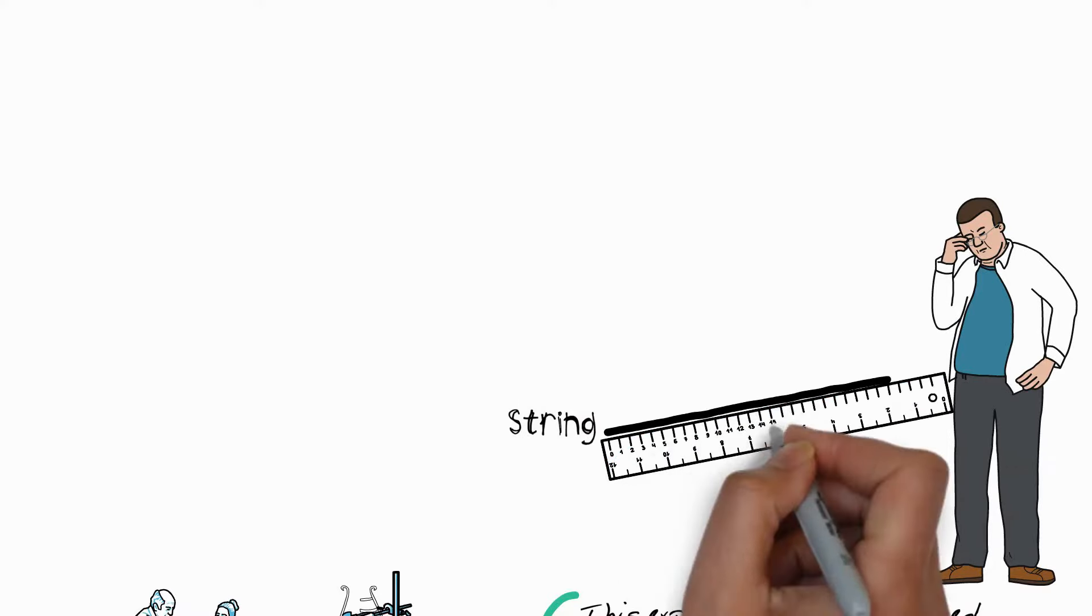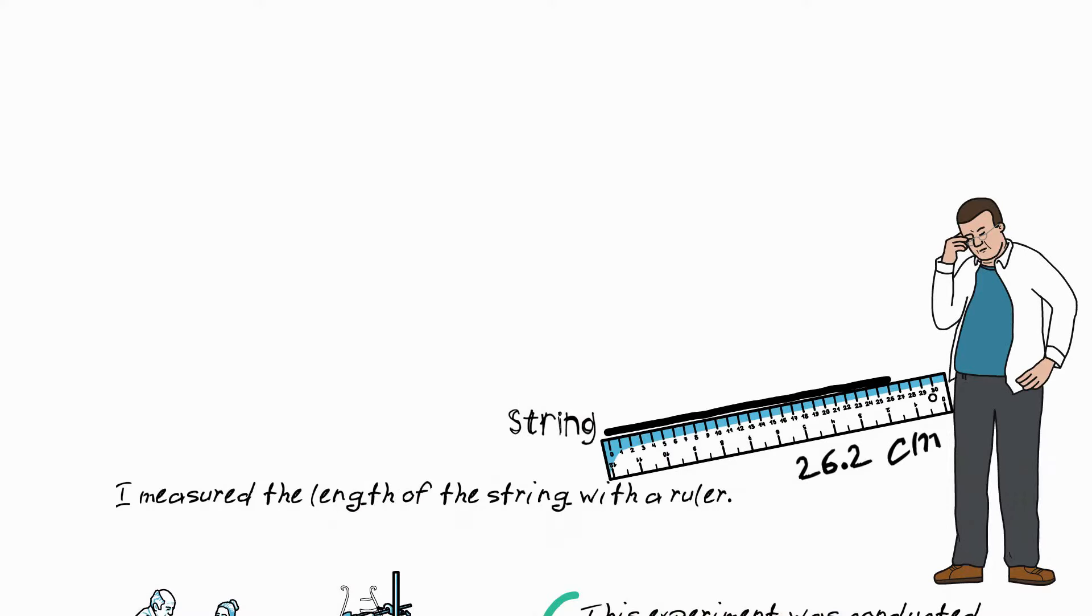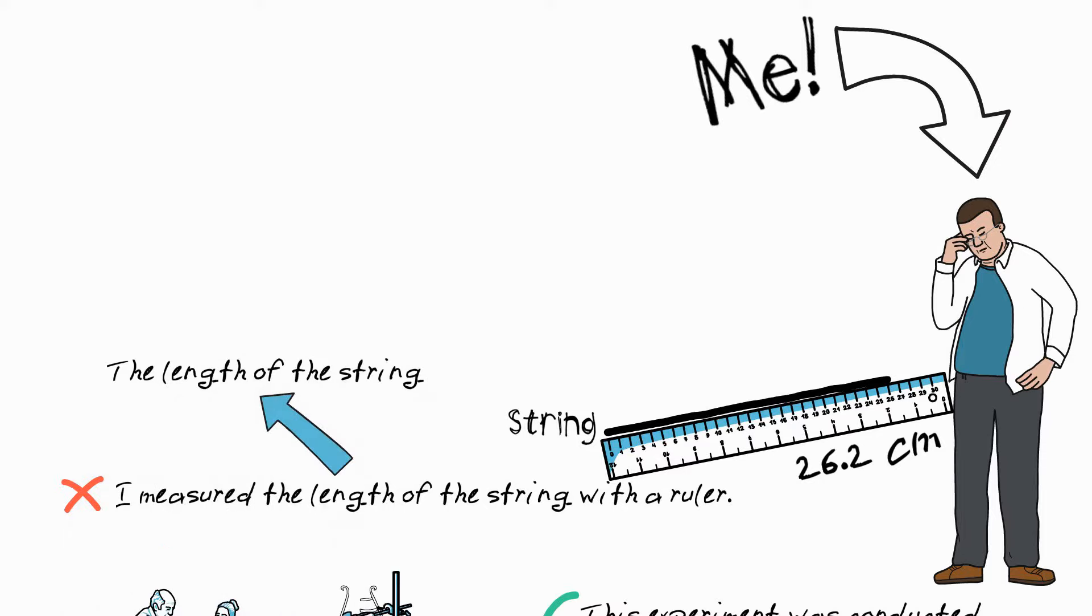A second example: rather than I measured the length of the string with a ruler, we make the length of the string the subject. The length of the string was measured using a ruler. So again, this is passive, and the actor, the impartial observer, has been removed from the sentence.